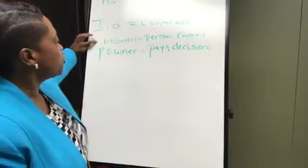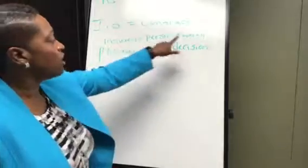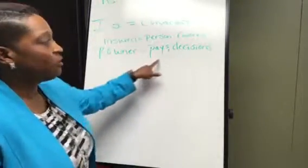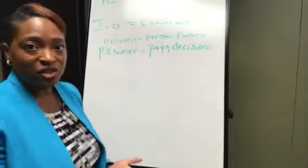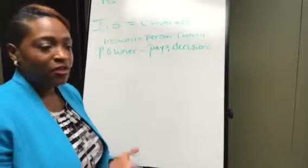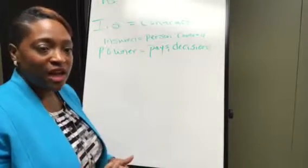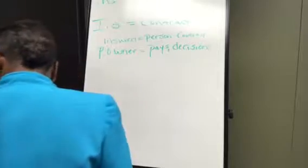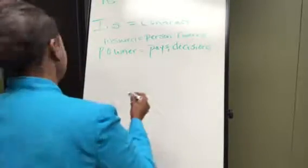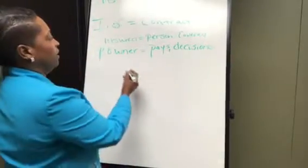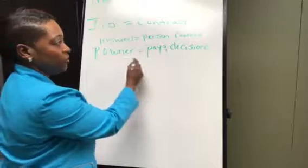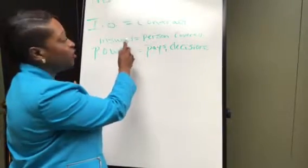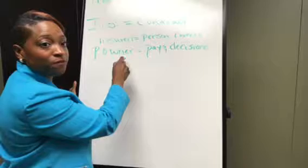The insured is the person who's covered, and the policy owner is the person who pays the premium and makes the decisions. They're going to decide on the coverage, they're going to decide on the beneficiary, that kind of stuff. The policy owner does not have to be the insured, and the insured does not have to be the policy owner.